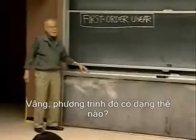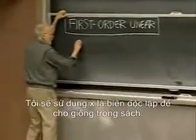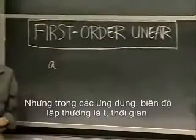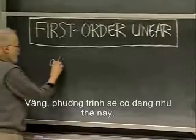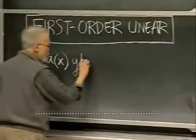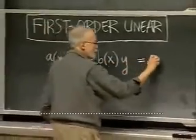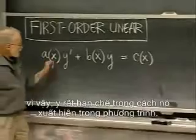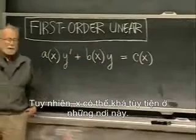What does such an equation look like? I'll write it — there are several ways of writing it, but I think the most basic is this. I'm going to use x as the independent variable because that's what your book does, but in the applications it's often t, time, that's the independent variable. The equation looks like this: some function of x times y-prime, plus some other function of x times y, equals yet another function of x. Obviously x doesn't have the same status here that y does — y is extremely limited in how it can appear in the equation, but x can be pretty much arbitrary in those places.